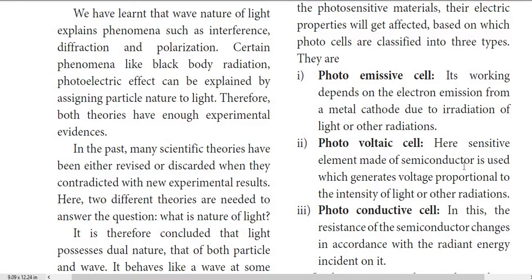A semiconductor is a partially non-conducting material. In a photovoltaic cell, a semiconductor device is used to generate voltage. The generated voltage is proportional to the intensity of light or other radiation — as intensity increases, voltage increases.